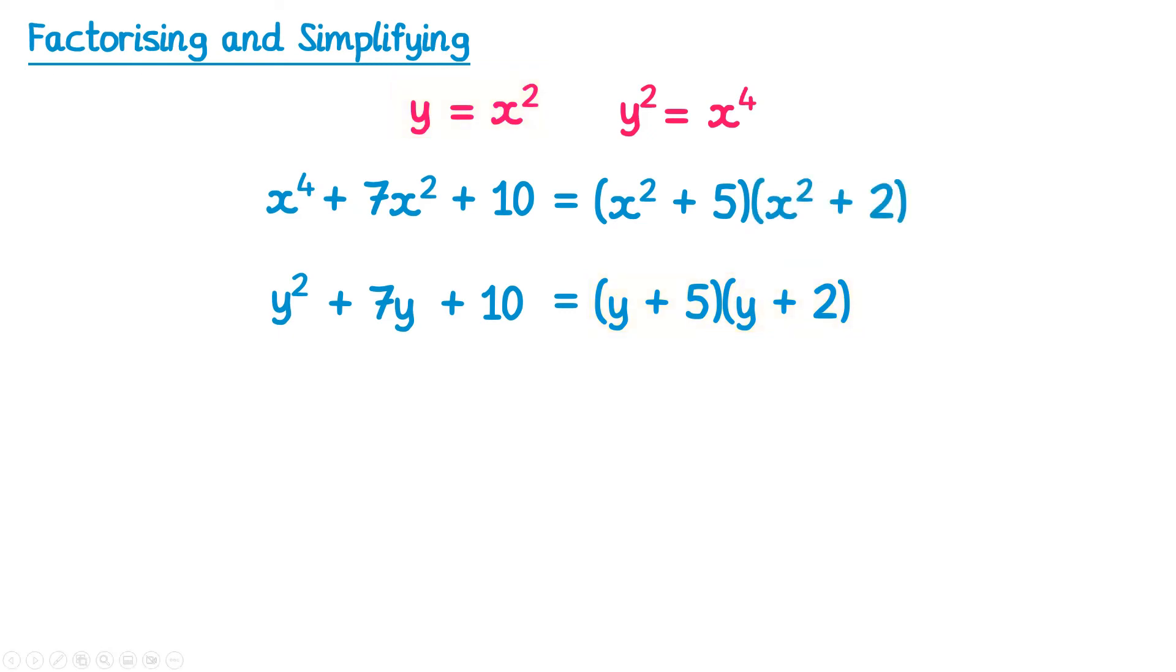Let's try a second example. This time we're going to factorise x⁴ - 81. Again we'll use the same substitution, y = x² and y² = x⁴. So we can replace the x⁴ with y², so this is really y² - 81.